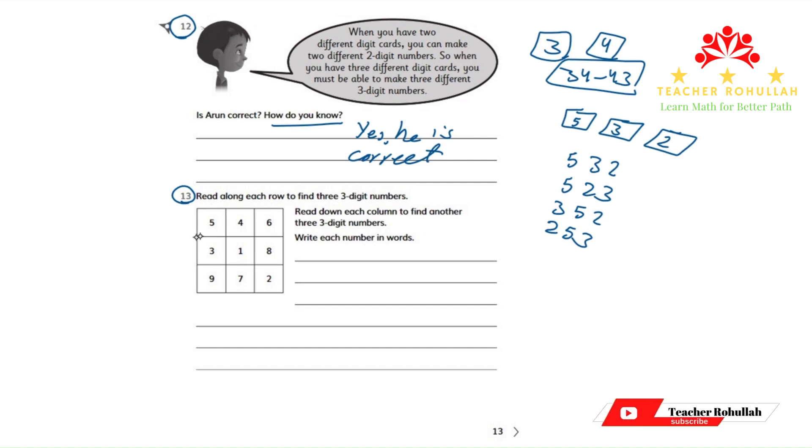Okay, along each row, we have 546, 318, and 972. I can easily write them down. Let me first write down the numbers along each row.